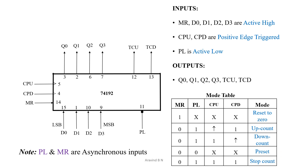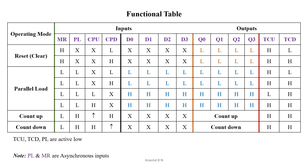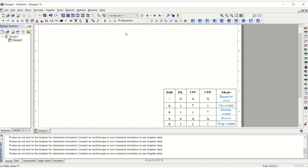Now let us go through the detailed functional table, which presents the mode table in a more elaborative manner. A detailed video has been done where this is clearly explained. Now let us get into the realization of the 74192 up counting and down counting operations using Multisim. For better understanding, the mode table has been copied here, and now let us start rigging up the circuit.